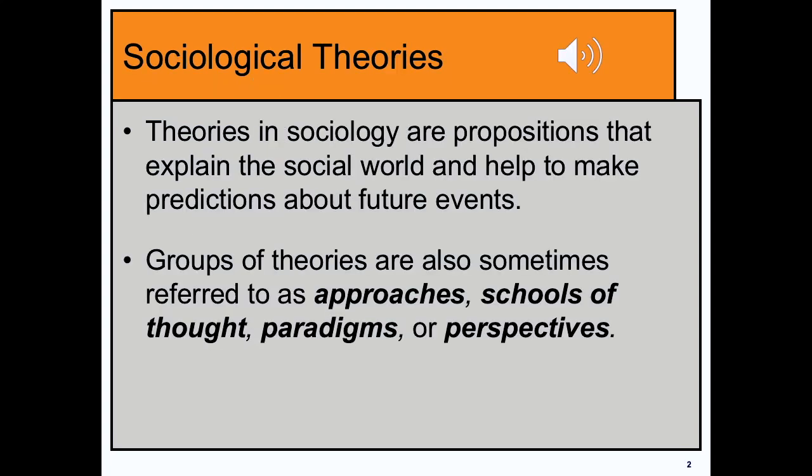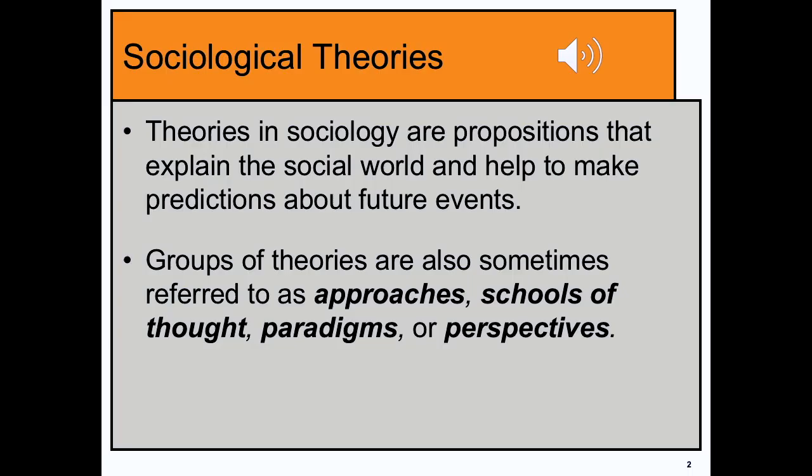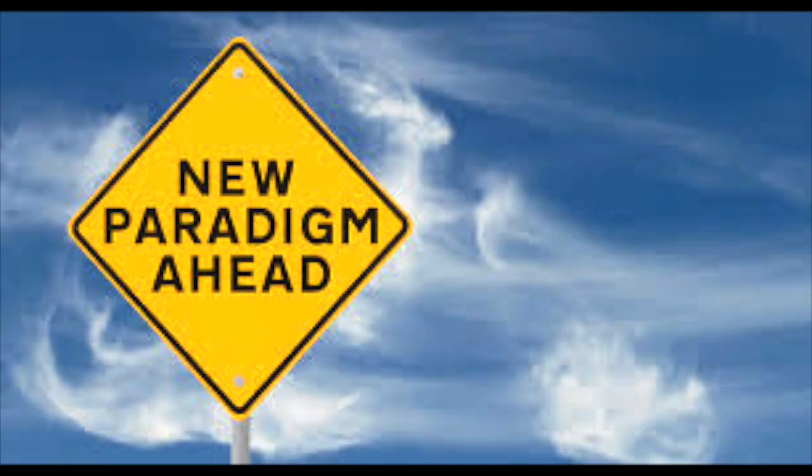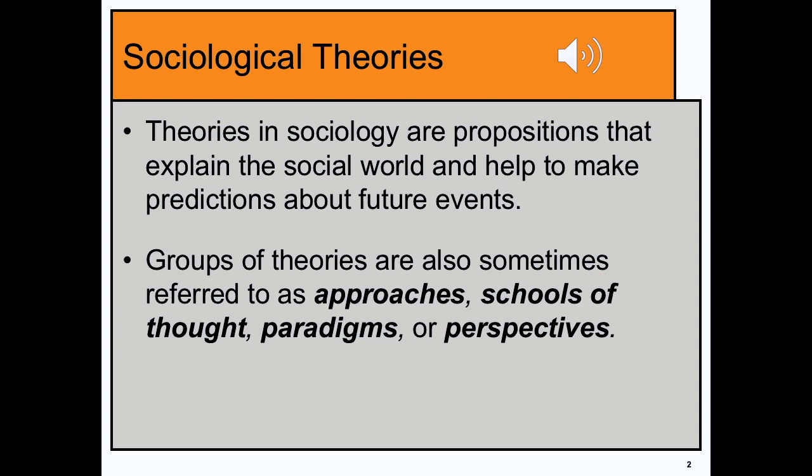So what are sociological theories? They are propositions that help us explain the social world, and from understanding these, we can make predictions about future events. Groups of theories are also known as paradigms, but you can also use other terms like sociological approaches, schools of thought, or sociological perspectives. All of these words are a little bit interchangeable.